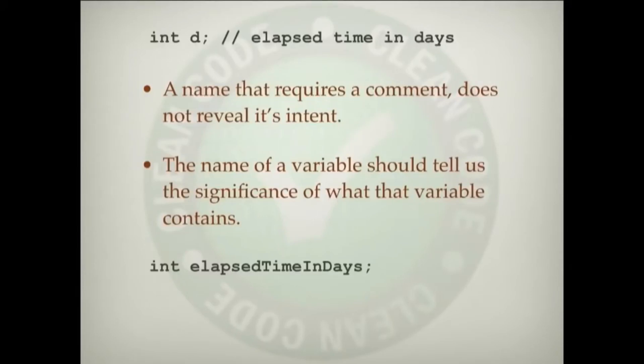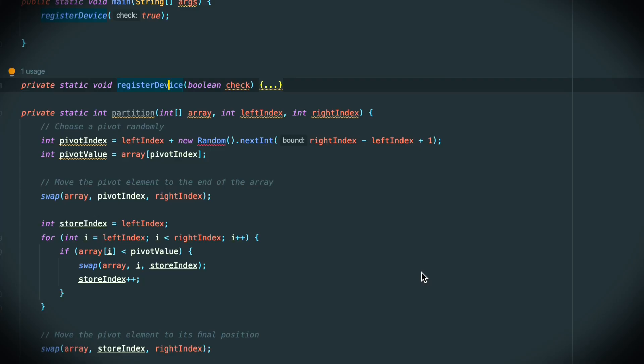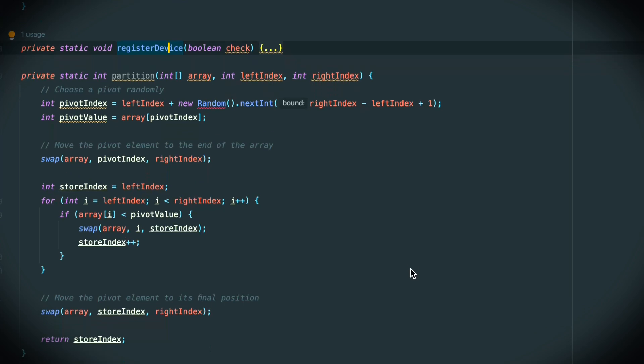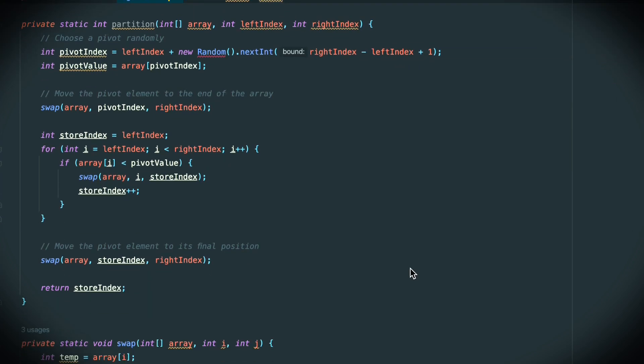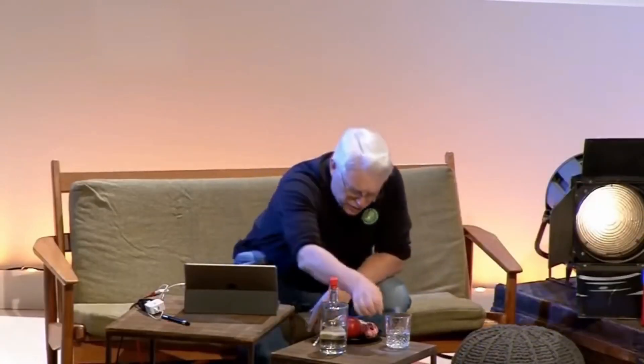But wait a minute. How long should a variable name be? What's the rule for the length of a variable name? Consider the for loop: `for i = 0; i < 10; i++`. Do you want that `i` to be something other than `i`? The answer is probably not. So there does seem to be a place for single-letter variable names, like `i`. So what's the rule?